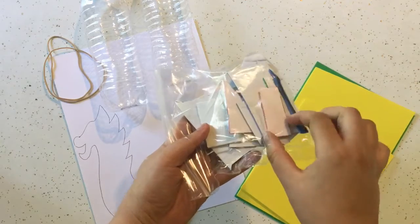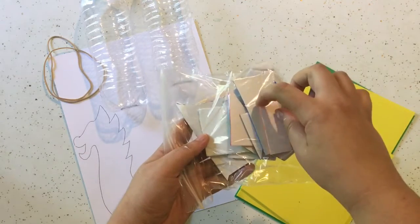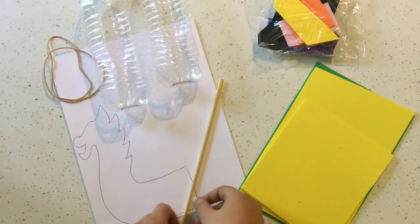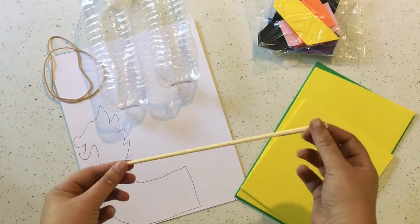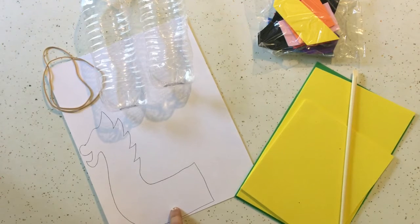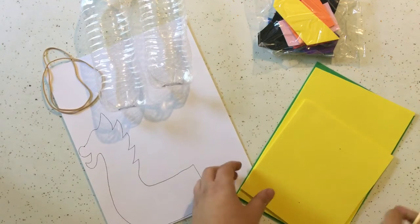All of these have paper on the back and they're sticky, so you can peel that off and use them like stickers. Then you also need this wooden stick and this dragon head template. So gather up all your supplies and let's get started.